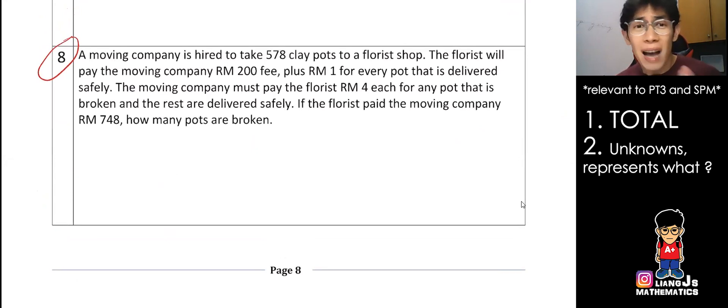Okay, a moving company is hired to take 578 - wow, total again. Okay, clay pots to a florist shop. The florist will pay the moving company - can you see price come out? Two different things: one is number of clay pots, one is RM, two different things. The RM is still not the total yet. So the florist will pay the moving company 200 plus RM 1 for every pot that is delivered safely.